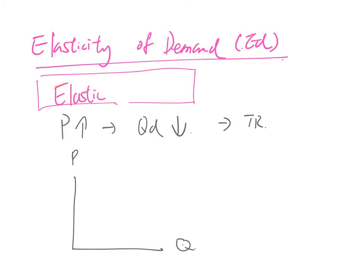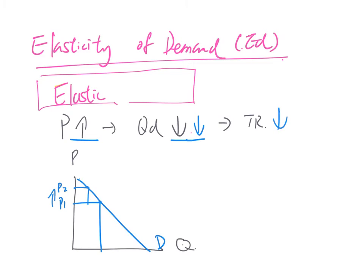For elastic demand, consumers have a greater response than the price change — the percentage change in price is less than the percentage change in quantity demanded. So with a larger quantity drop, total revenue decreases. In the diagram, using a 45-degree straight demand curve on the upper part, with P1 to P2 increasing and Q1 to Q2 decreasing, the minus area is bigger than the plus area, so total revenue decreases.